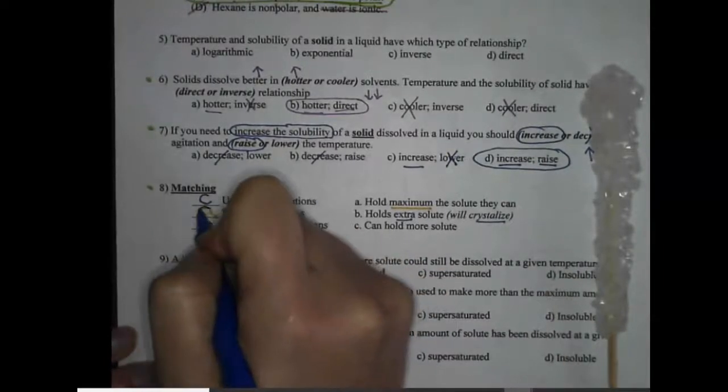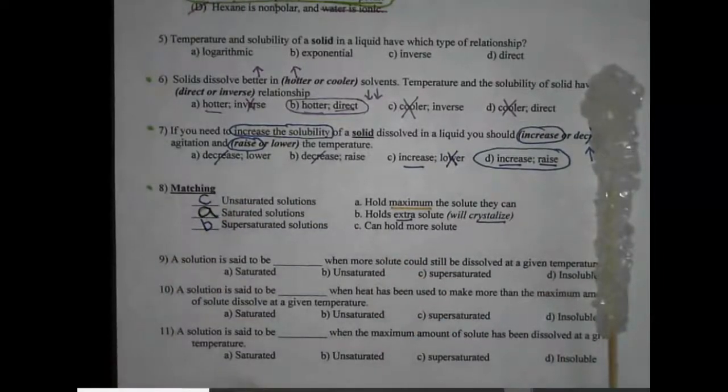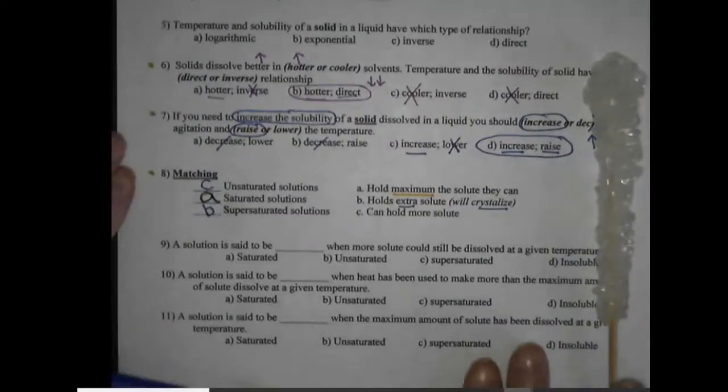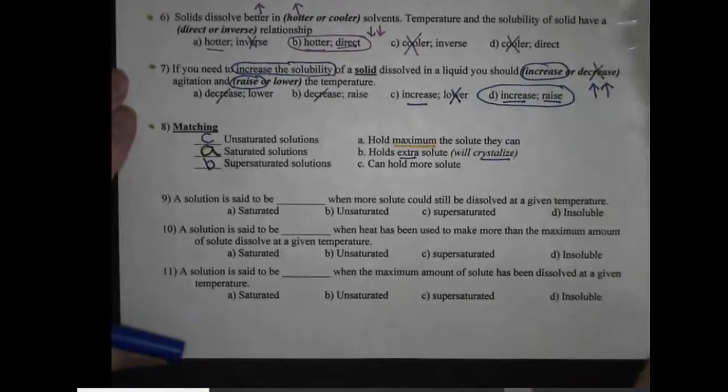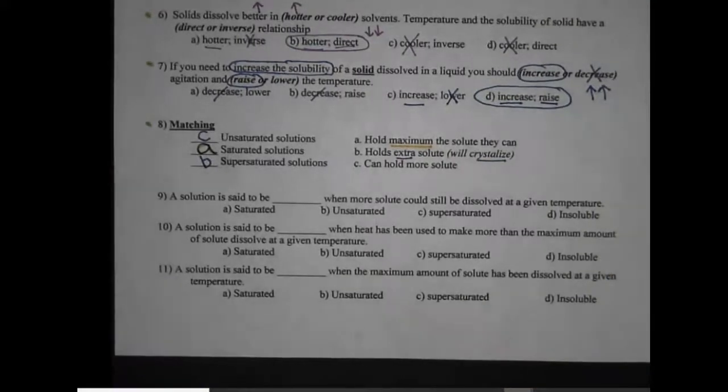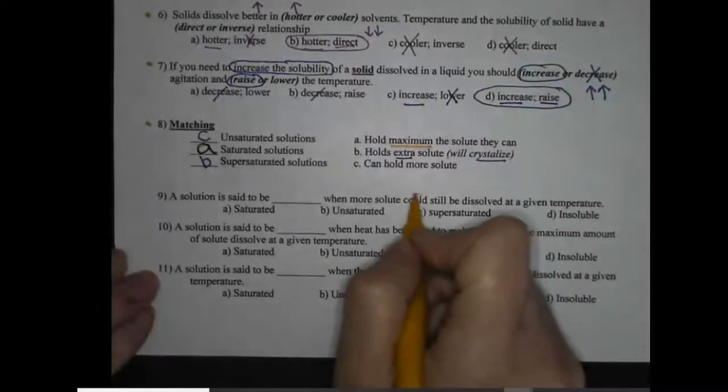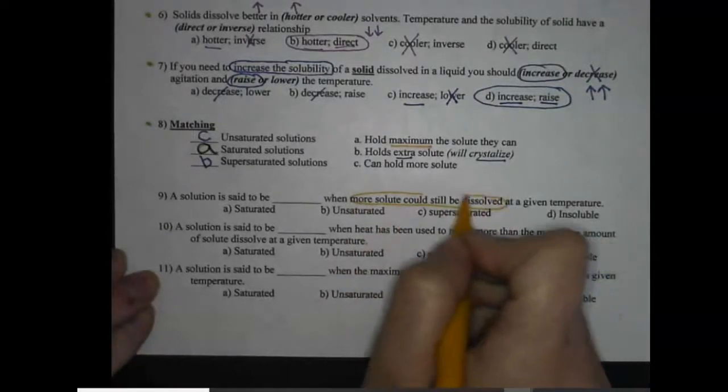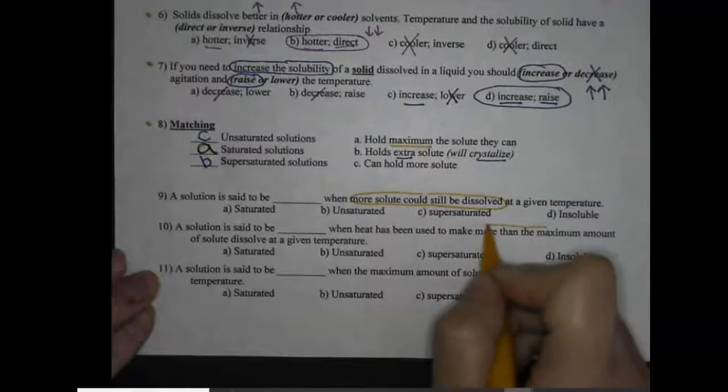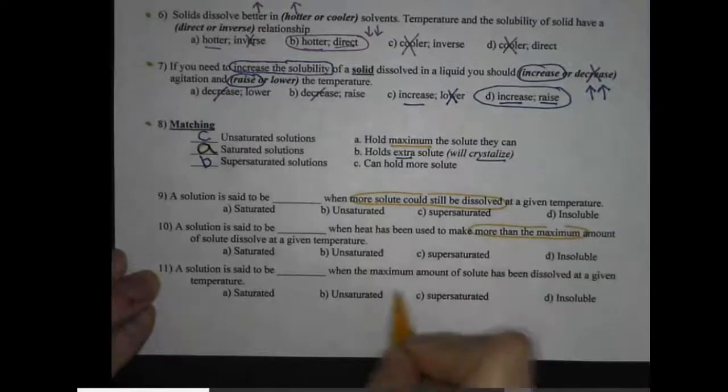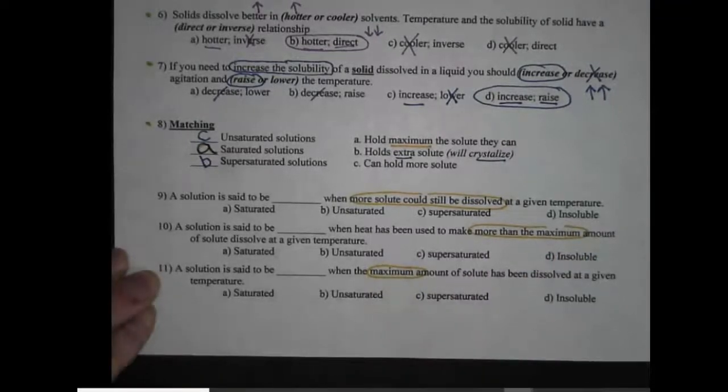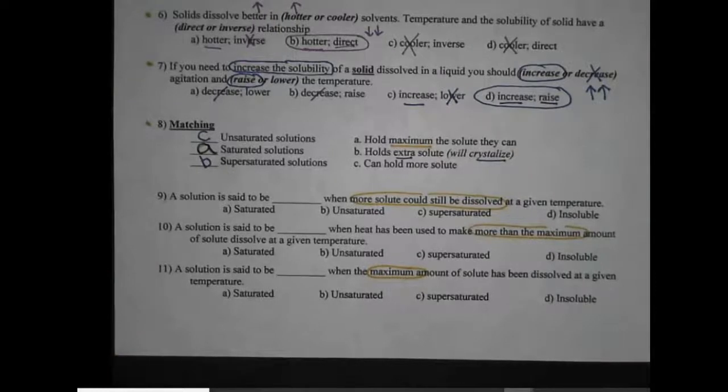And then those are the same keywords you're going to be looking for on 9, 10, and 11. So I'm going to let you go ahead and do that. I'm just gonna let me circle some keywords. More solute could be dissolved, more than the maximum, and maximum. All right, hopefully that's quick and easy. Thanks y'all.